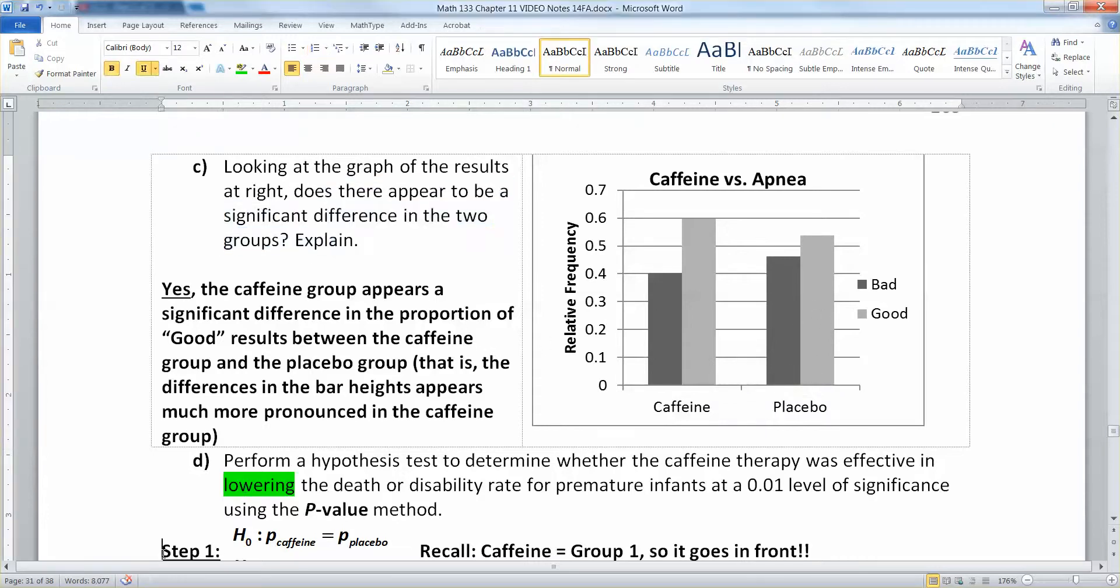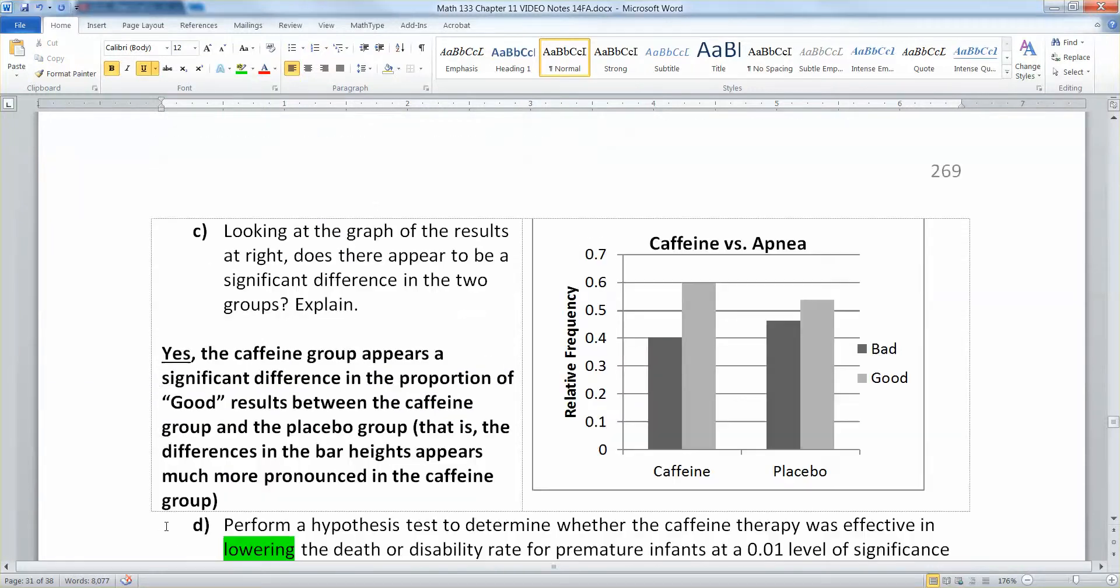So does there appear to be a significant difference in the two groups? The answer to that is yeah, yeah there does appear to be a big difference and that's because the height difference in the bars, so that the differences in the bar heights appears much more pronounced in the caffeine group.